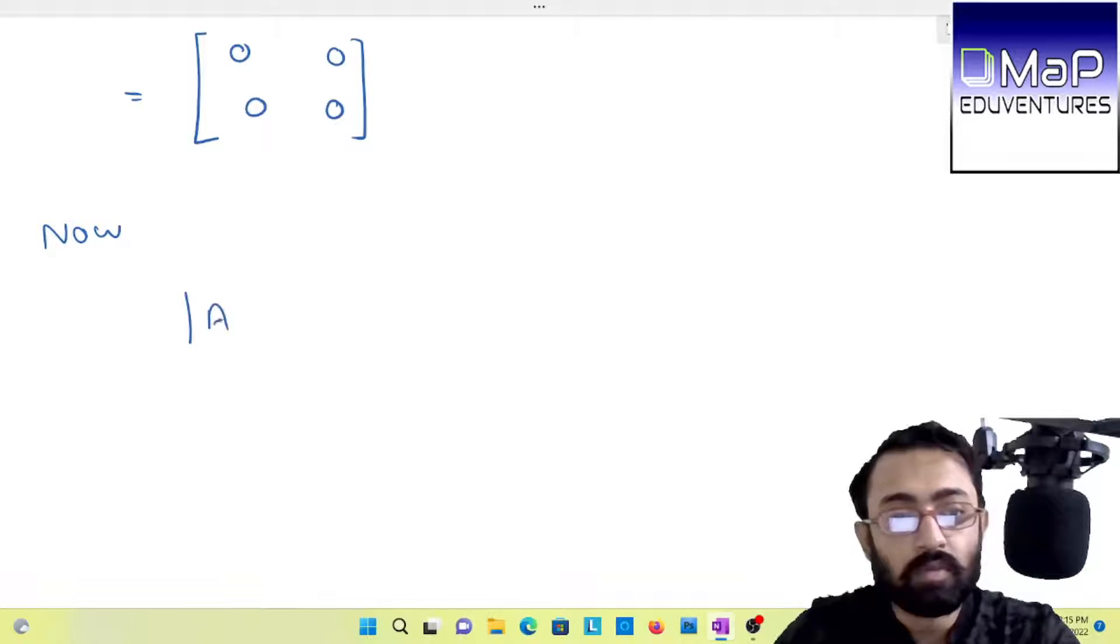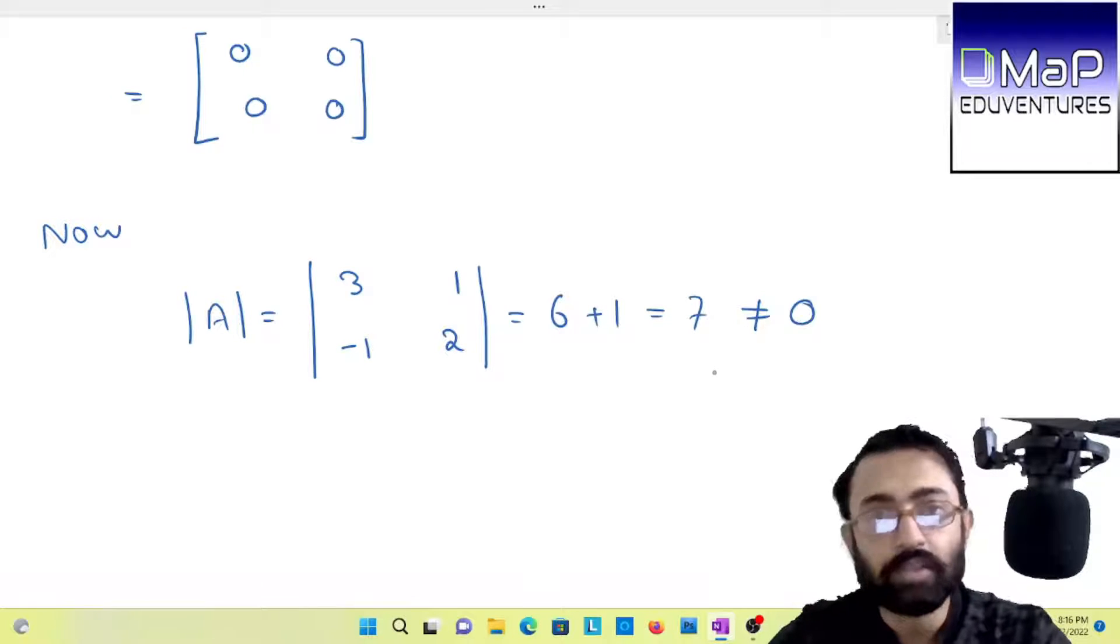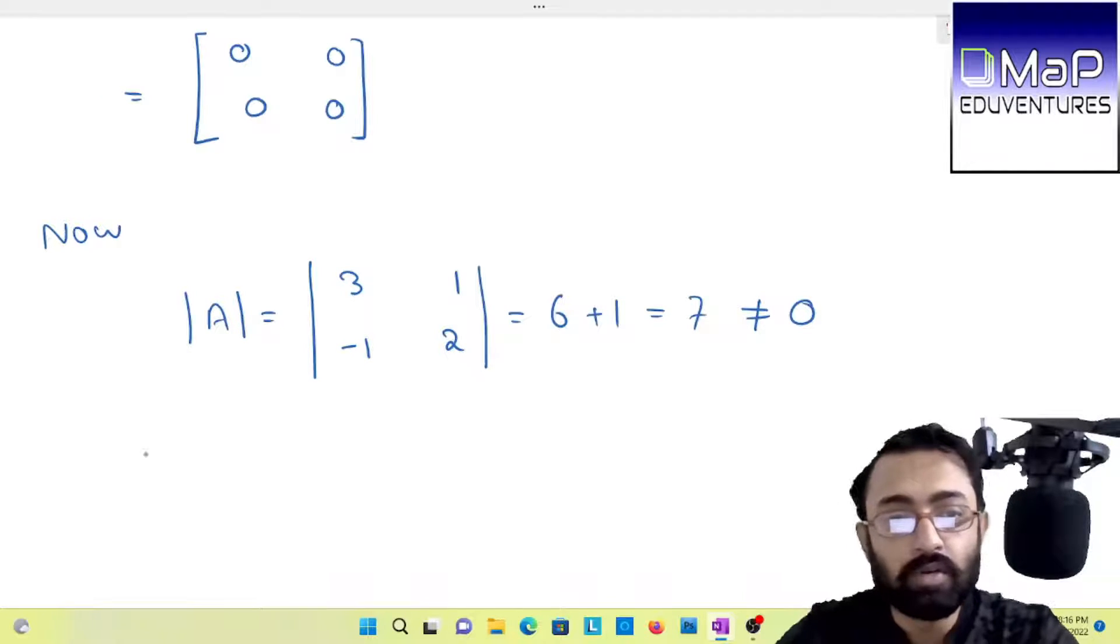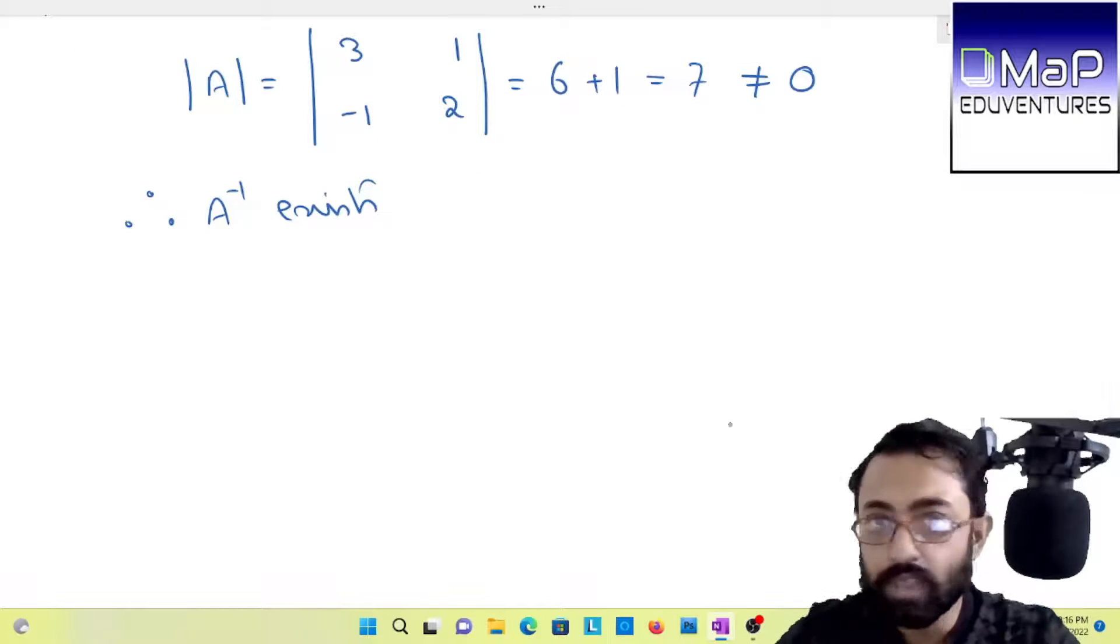First of all, we have to know whether A inverse exists or not. A inverse may not exist. If determinant of A is not equal to 0, then it is called non-singular, and if the matrix is non-singular then only your inverse will exist. Let us see whether A inverse exists or not. The determinant of A, as you can see, the result is not 0. Therefore A inverse exists.